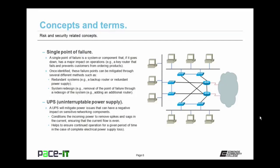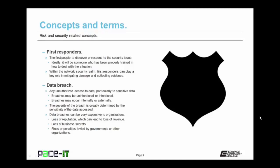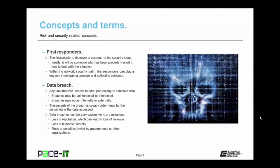First responders are the first people to discover or respond to a security issue. Ideally, it will be someone properly trained in how to deal with the situation. Within the network security realm, first responders can play a key role in mitigating damage and collecting evidence. Then there's the concept of a data breach, which is any unauthorized access to data — particularly sensitive data. Breaches may be unintentional or intentional, and may occur from inside the network or from an external source. The severity of the breach is greatly determined by the sensitivity and quantity of the data that's been accessed.